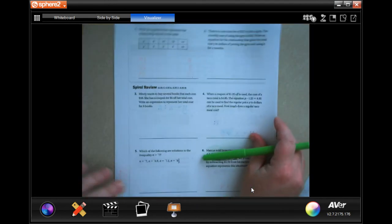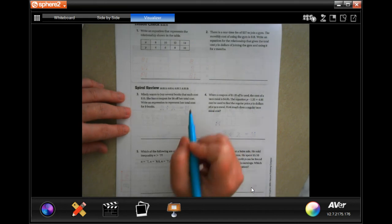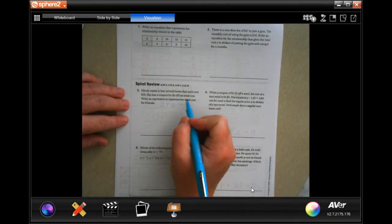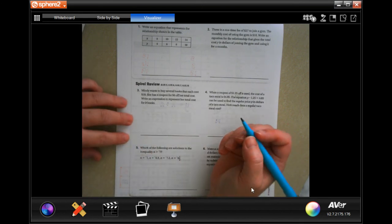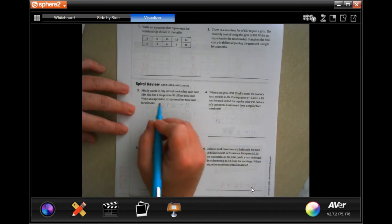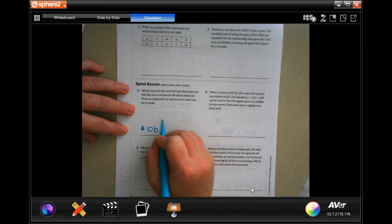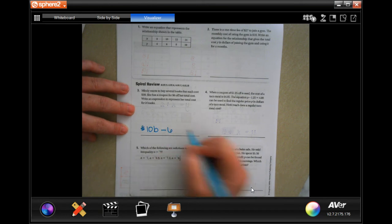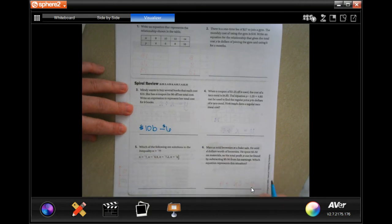Go on to the back where you guys are going to do the lesson check because you're brilliant geniuses, and we're going to go down and do the spiral review. So our spiral review starts with: Mindy wants to buy several books that each cost ten dollars. She has a coupon for six dollars off her total cost. Write an expression to represent her total cost for b books. Well so we're going to have ten dollars per book right, so 10b minus six dollars. That's it guys, so ten dollars per book and then we're going to subtract that six dollars.